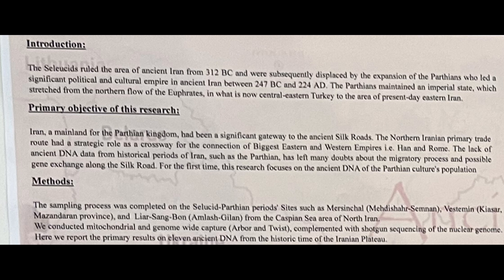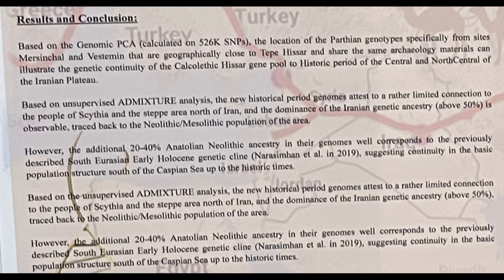Moving on, here we have the findings for the study. The gist basically says that these ancient Iranians have mostly Iranian descent from an indigenous Iranian farmer source, alongside around 20 to 40 percent of their ancestry deriving from a Neolithic Anatolian source. What this means is that on a genetic level these samples are mostly of indigenous Iranian and Anatolian farmer ancestry, corresponding to Iran Chalcolithic descent, as these two populations form the heritage of the Chalcolithic Iranians.